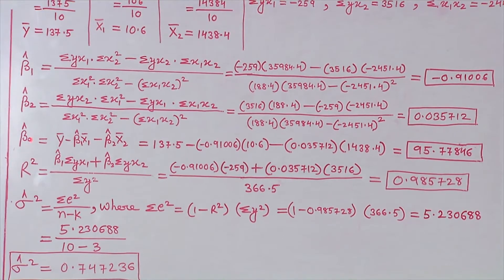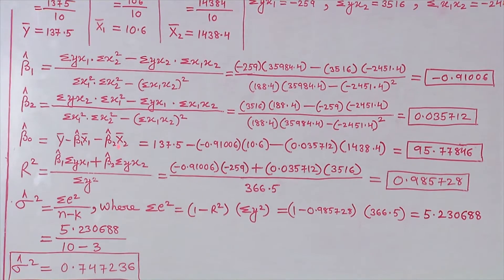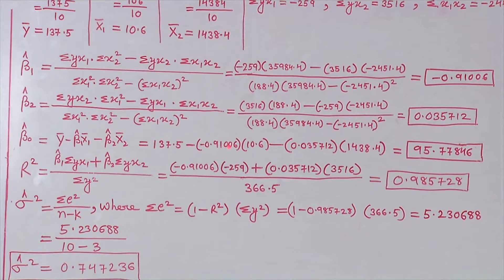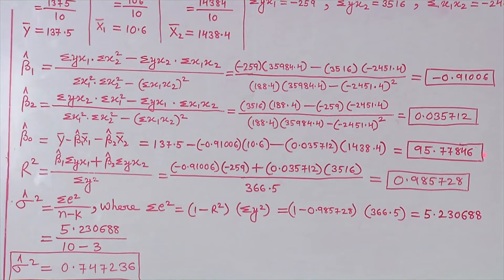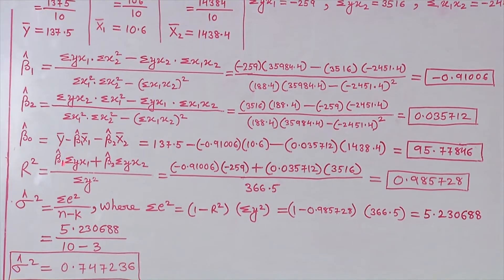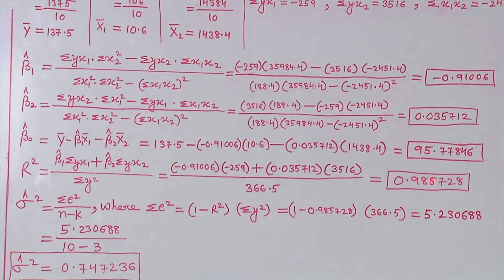β̂₀ can be calculated with the formula ȳ − β̂₁x̄₁ − β̂₂x̄₂, where ȳ = 137.5, x̄₁ = 10.6, and x̄₂ = 1488.4. After substituting the values, we get β̂₀ = 95.77846. The R² value can be calculated using the formula (β̂₁·σyx₁ + β̂₂·σyx₂) / σy², which equals 0.985728.